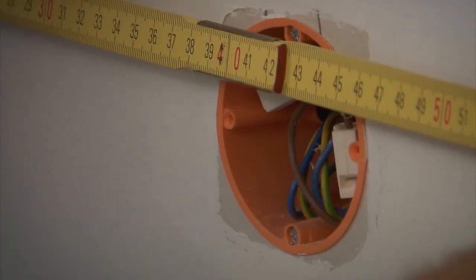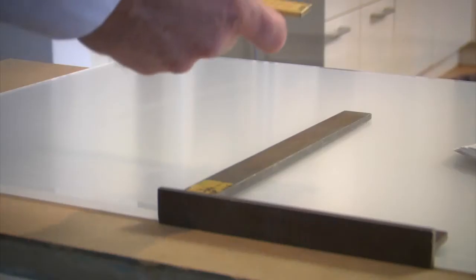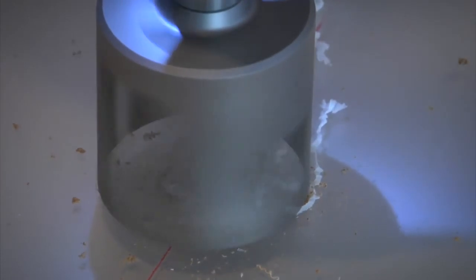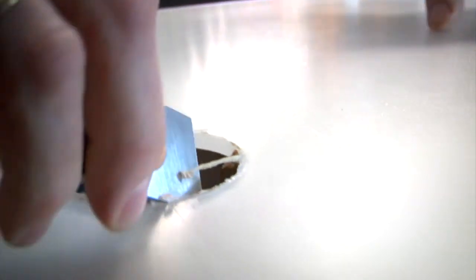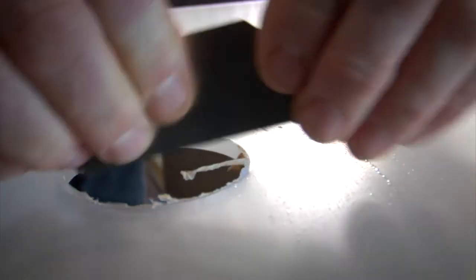The next step is to measure the exact positions of the sockets and to mark them onto the acrylite sheets. It is important here to work extremely accurately so that everything fits in the end. While drilling acrylite or working with a hole cutter, you should always add some water for cooling. Finally the edges are smoothed.